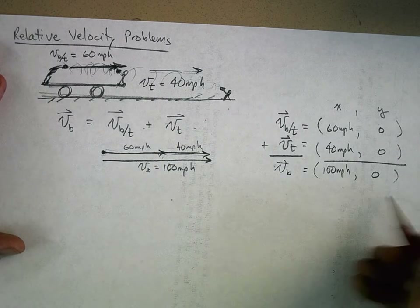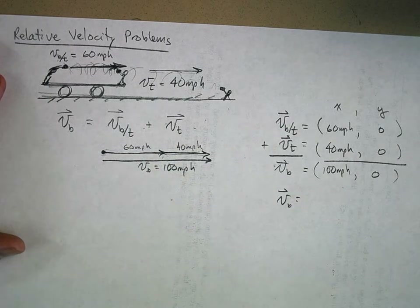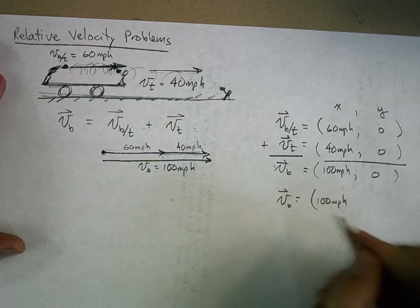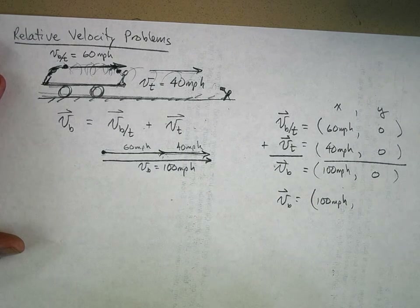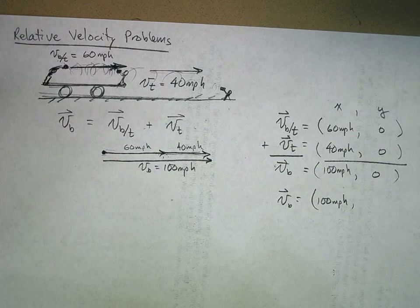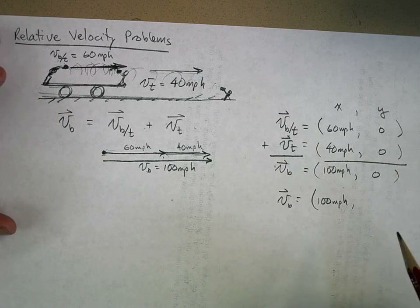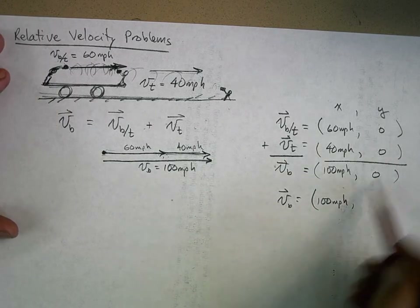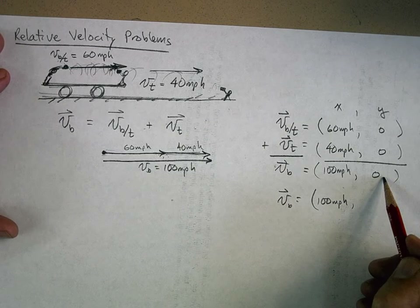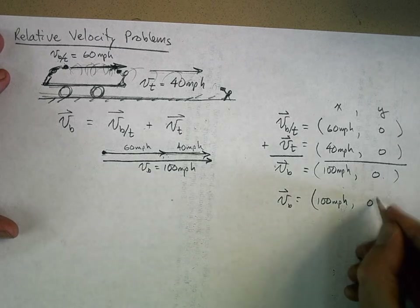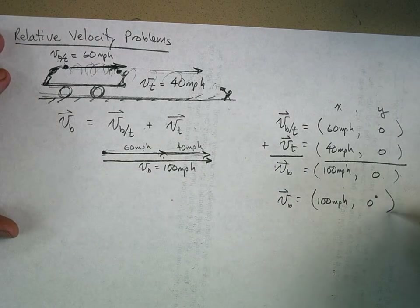What if I wanted to express this in polar coordinates? The magnitude is 100 miles per hour. The Y component is zero — it's all in the X. So what angle goes strictly in the X direction? Zero degrees. So in polar coordinates it's 100 miles per hour at 0 degrees. It kind of looks the same, but it's not.